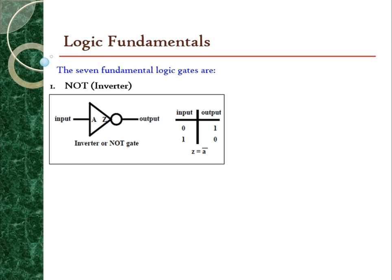There are seven fundamental logic gates which can be combined to become combinatorial logic and used in the ladder logic diagram. The first gate is NOT, also called the inverter. NOT gates are special because the output is the same type as the input, but the input is inverted to the opposite state.